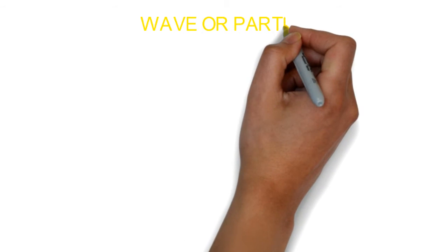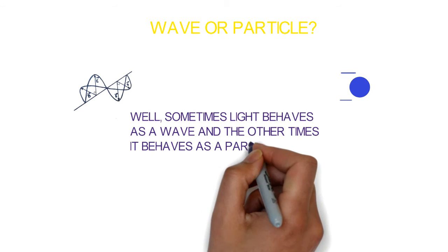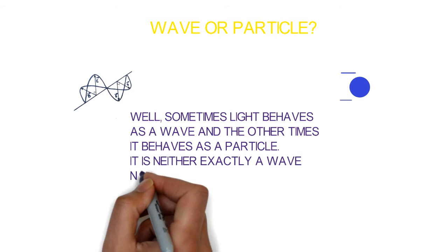So what is light? A wave or a particle? Well, sometimes light behaves as a wave and other times it behaves as a particle. It's neither exactly a wave nor exactly a particle.